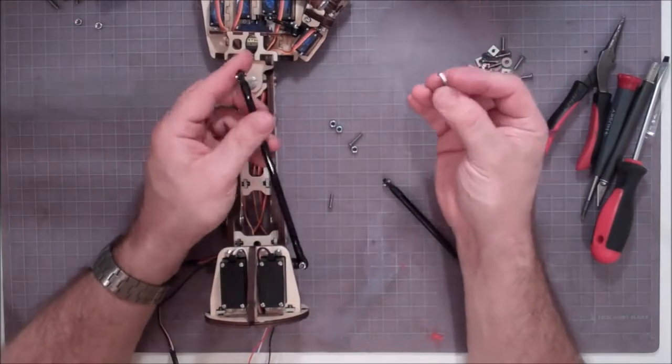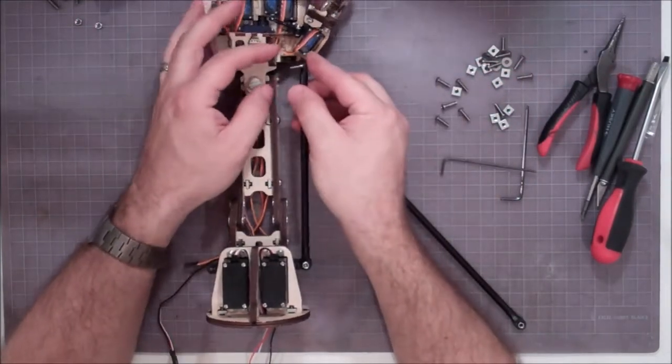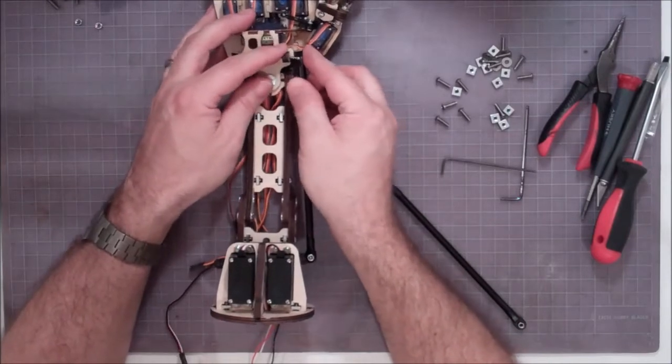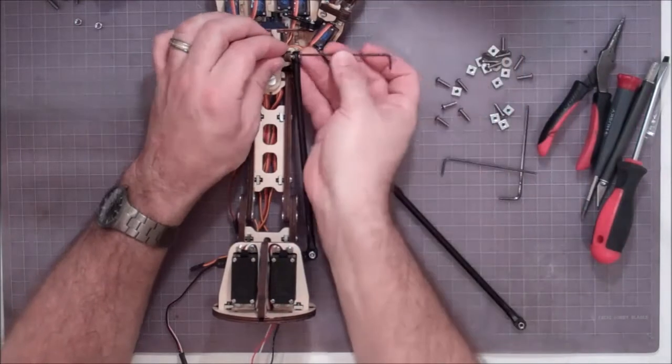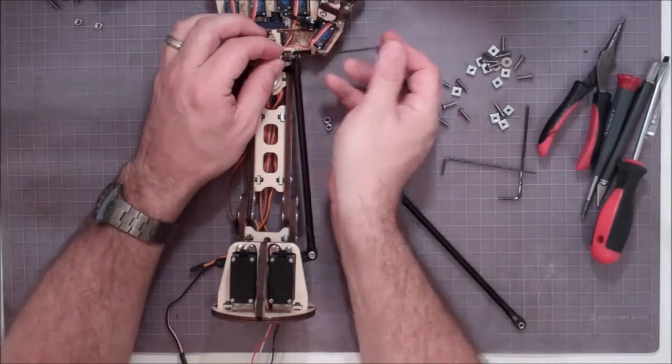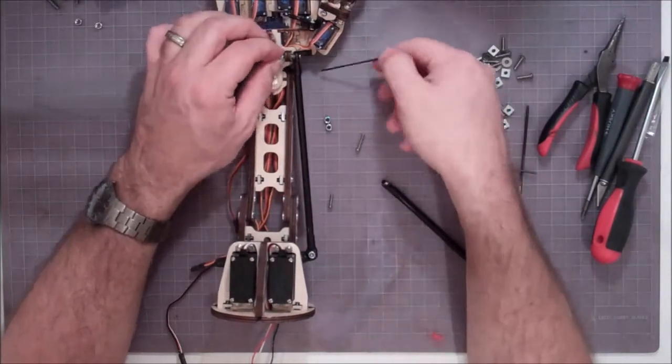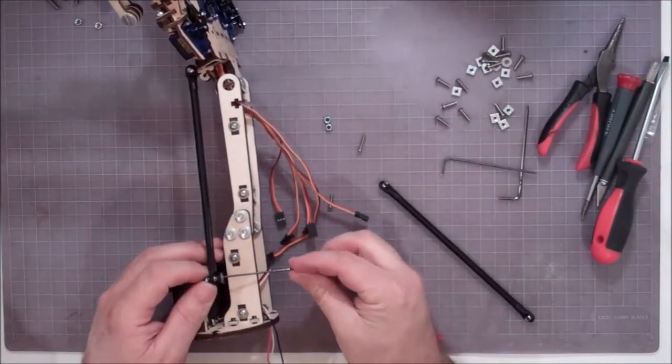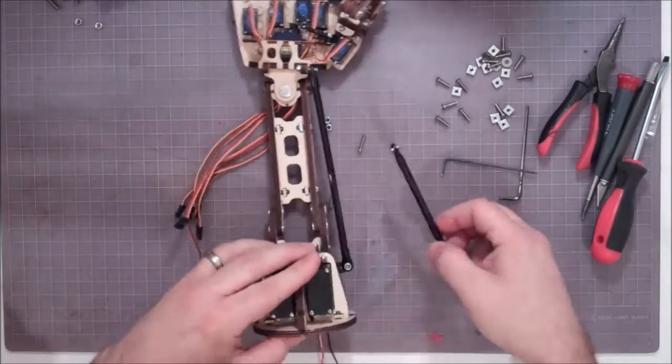And then up top, the longer 440 goes through the rod end first, through the wood tab, and then we get the nut. Now you need a smaller Allen wrench for the 440 screws, but you should have one from all the previous work. Okay, that's one side. Now we're going to roll it over and put it on the other side.